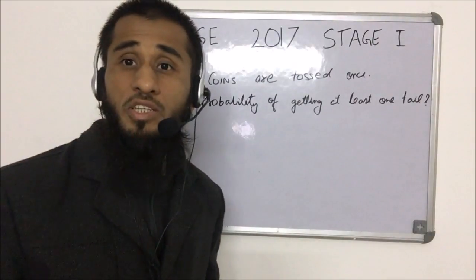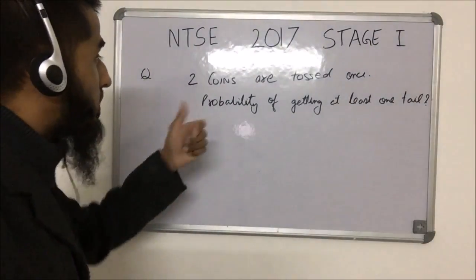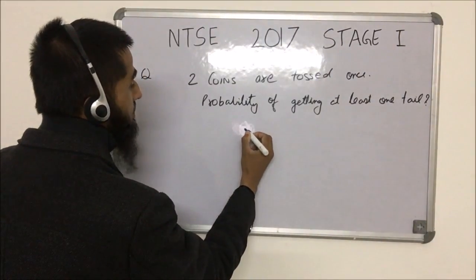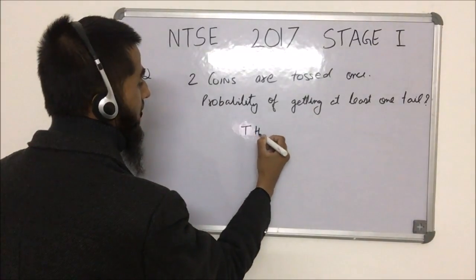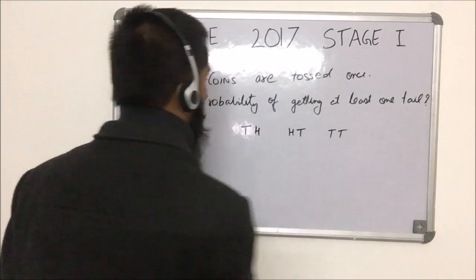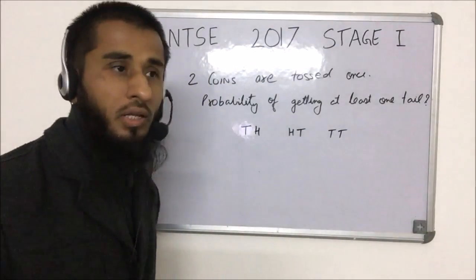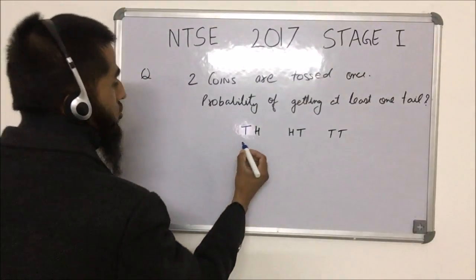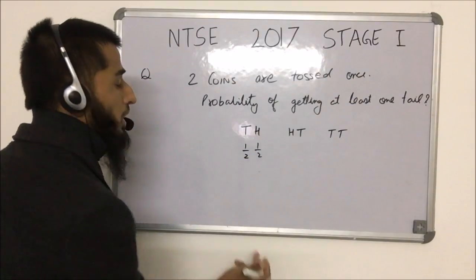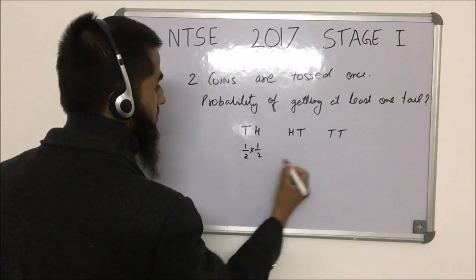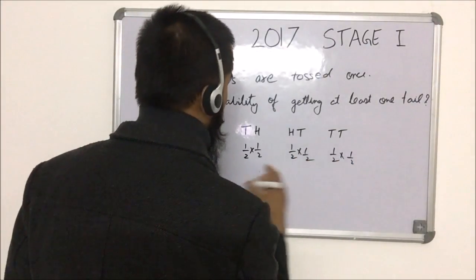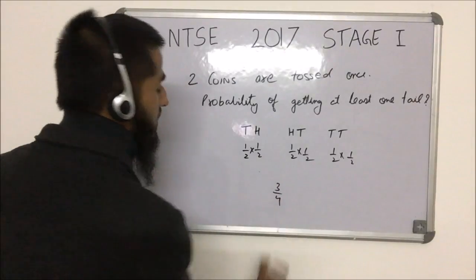This is a simple probability question: two coins are tossed once, and we need the probability of getting at least one tail. The favorable cases are: tail-head, head-tail, and tail-tail. Each has probability 1/2 × 1/2 = 1/4. So the total probability is 1/4 + 1/4 + 1/4 = 3/4.